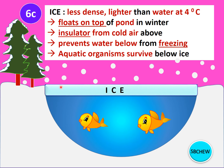If ice were denser than water, it would sink to the bottom and cause the lake to freeze from the bottom upwards, killing all the organisms during winter. So ice being less dense than water is important for the survival of aquatic organisms, especially in winter time.